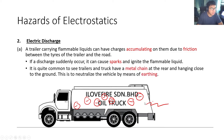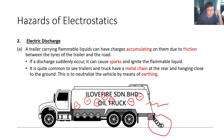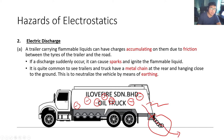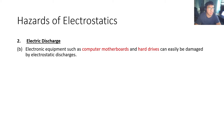It is quite common to see trailers and trucks with a metal chain at the rear hanging close to the ground. This is to neutralize the vehicle. Any built-up charges can move through this chain and go to the ground safely, without creating a spark and without igniting the flammable liquid.